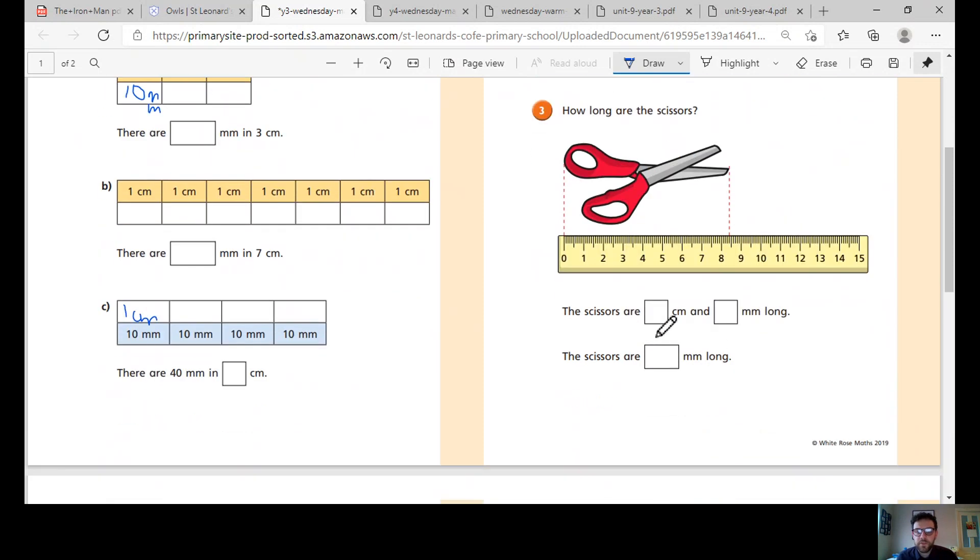How long are my scissors? This is how many centimetres first, so you count up: one, two, three, four, five, six, seven, eight. Then work out how many more millimetres very carefully. Then you're going to convert it all into millimetres.